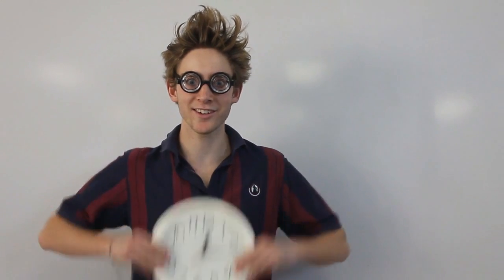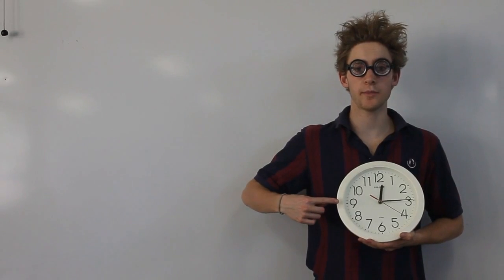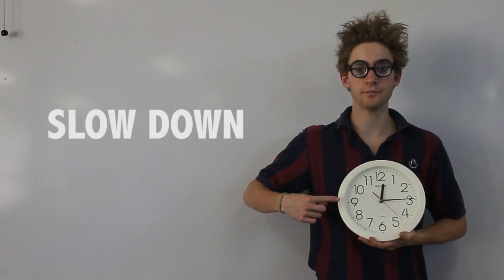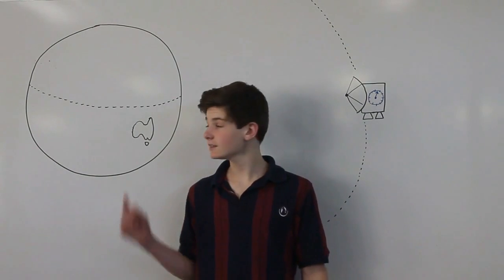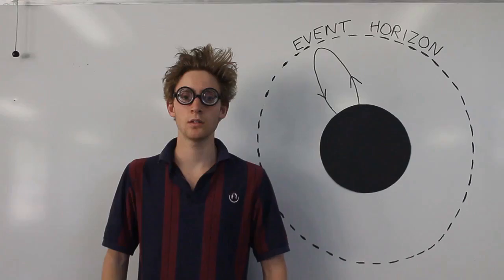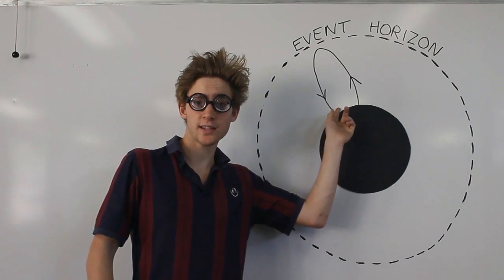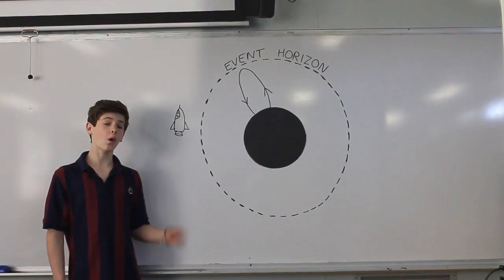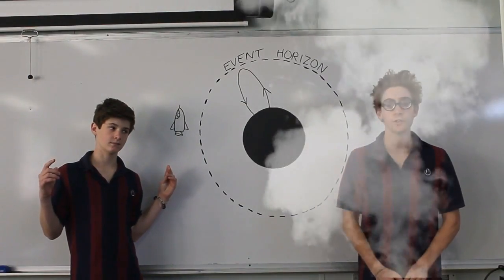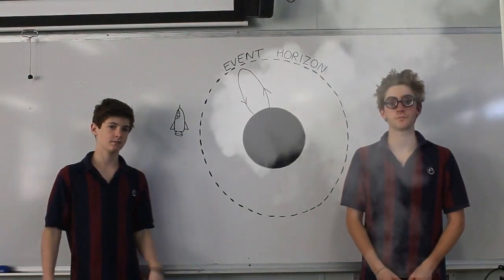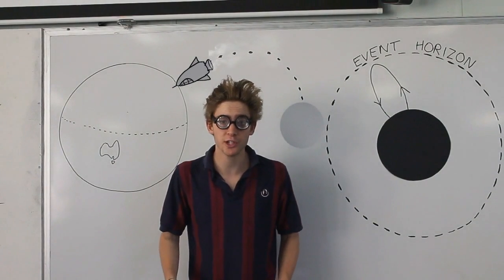Mass also affects time. Strong gravity makes time slow down — one second on a satellite is slightly longer than one second on Earth. A black hole has gravity so strong that not even light can escape. If you orbit a black hole for one year, hundreds of years will pass on Earth, meaning you've travelled hundreds of years into the future.